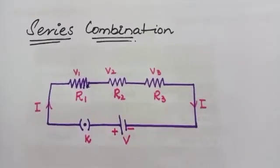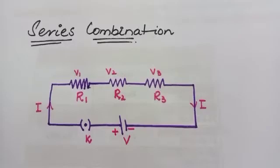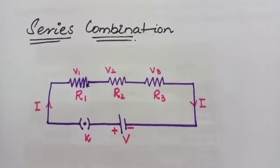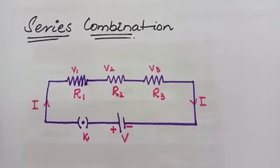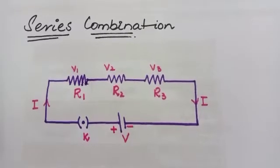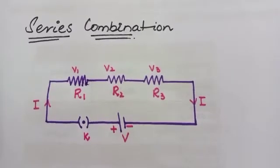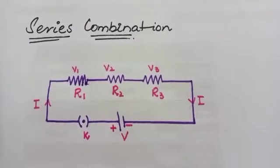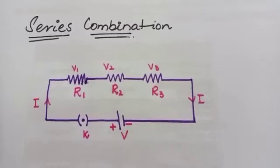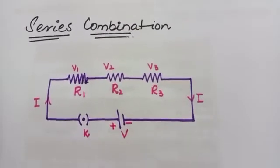In series combination, resistors are connected end to end and the electric current has a single path through the circuit. This means that the current passing through each resistor is the same.